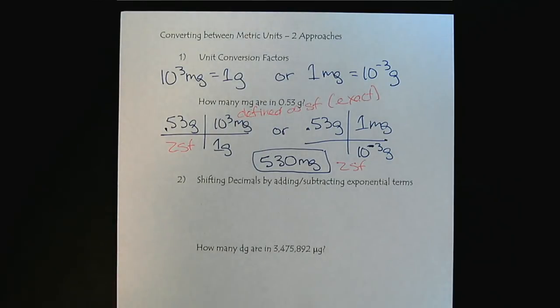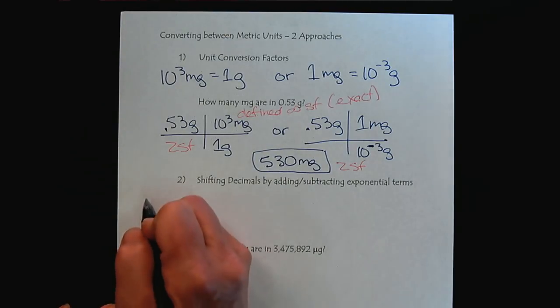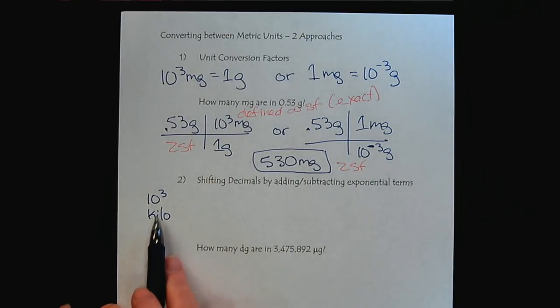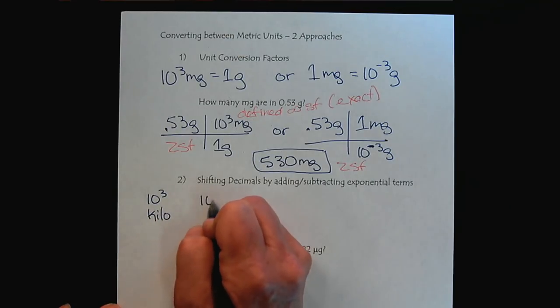Now, the other way to approach metric conversions is the shifting method. The shifting method requires a little bit of memorization, but once you have the setup, it can be very handy. So we need to look at the metric prefixes in the following order. So we start with kilo on the left, and then ten to the zero. That would be our base unit.